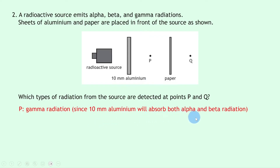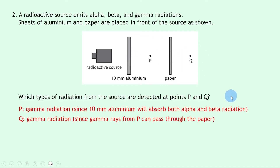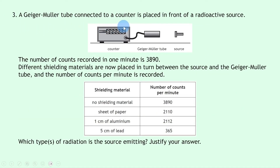At point P we're only going to detect gamma radiation, since the 10 millimetres of aluminium will absorb both alpha and beta radiation. Remember, alpha is stopped by a single sheet of paper, whereas both alpha and beta are stopped by aluminium. Since only gamma reaches point P, it's only the gamma that can pass through the paper to reach point Q. So at point Q we also only detect gamma radiation.